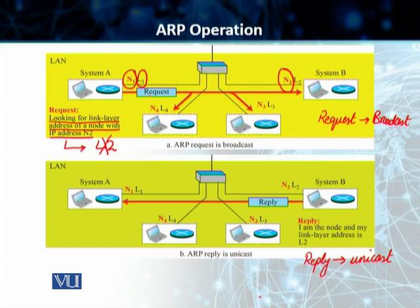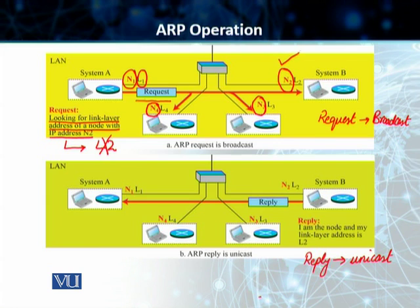The request is sent in the form of a broadcast. The broadcast is received by all entities connected on that link. In this case, it's received by the machine with IP address N4, the machine with IP address N3, and also by our destination host, system B, which has an IP address of N2.